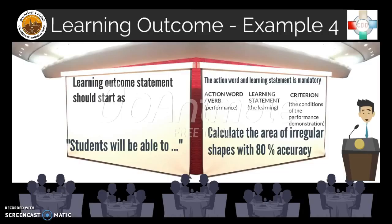The third example of a learning outcome statement is: 'Students will be able to calculate the area of irregular shapes with 80% accuracy.' Here, 'calculate' is the action verb, 'the area of irregular shapes' is the learning statement, and 'with 80% accuracy' is the criterion.